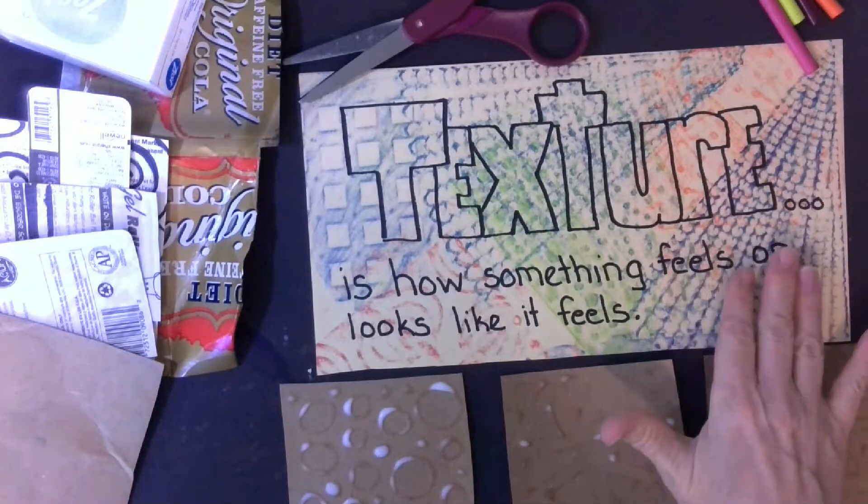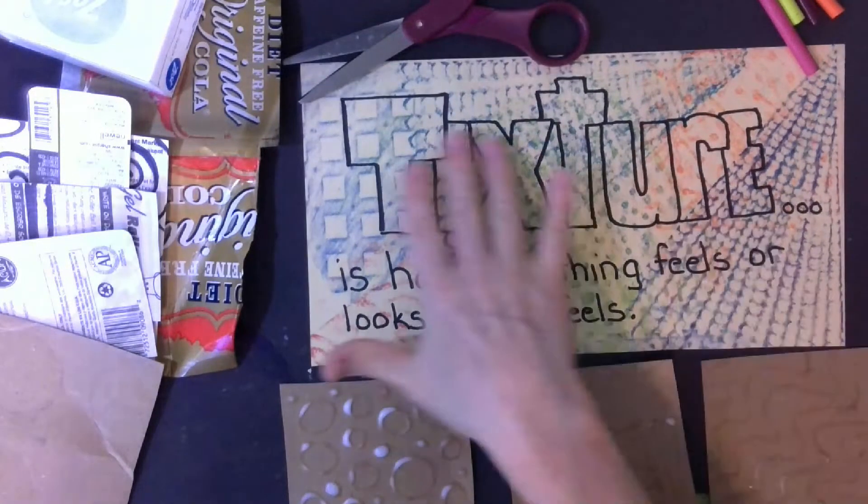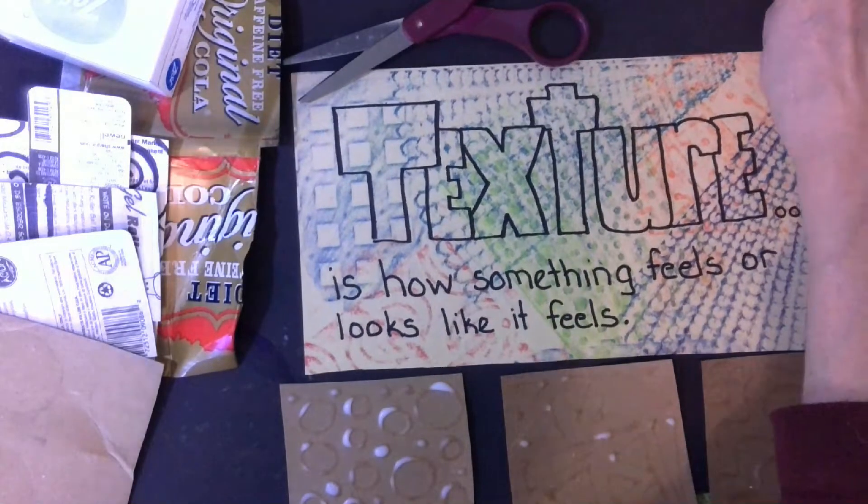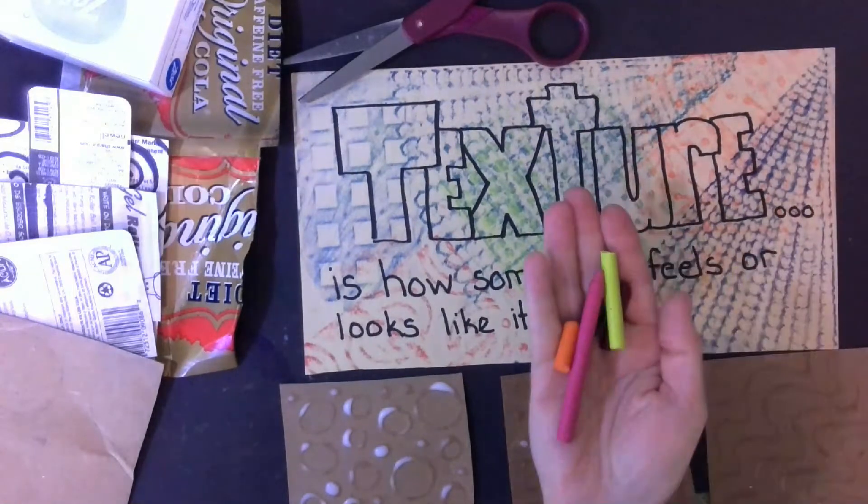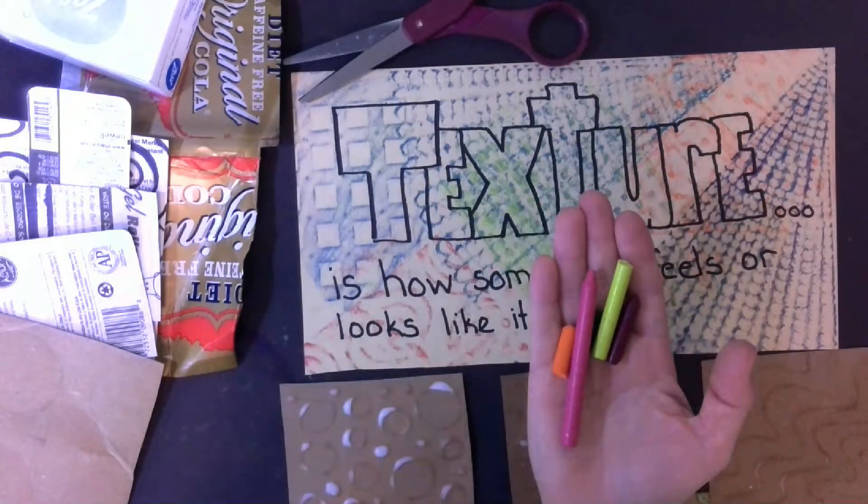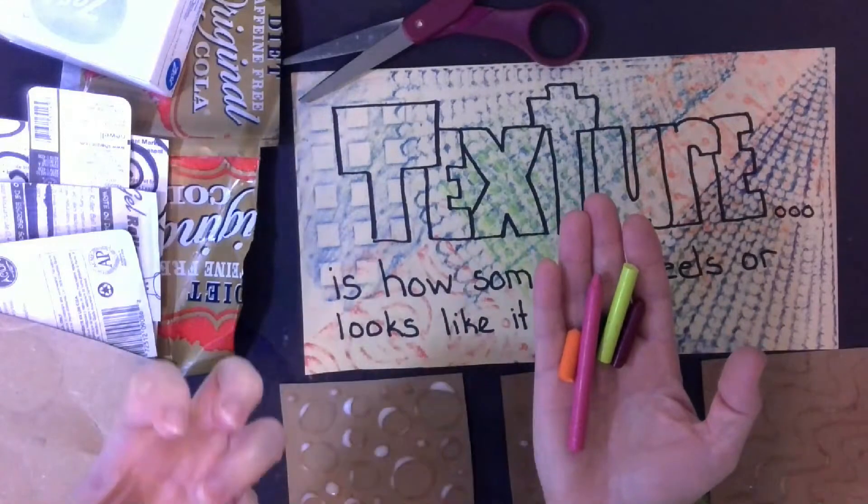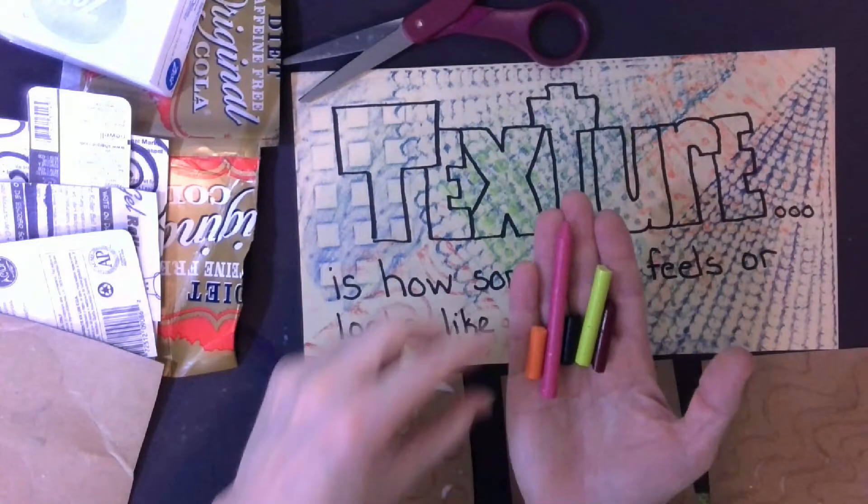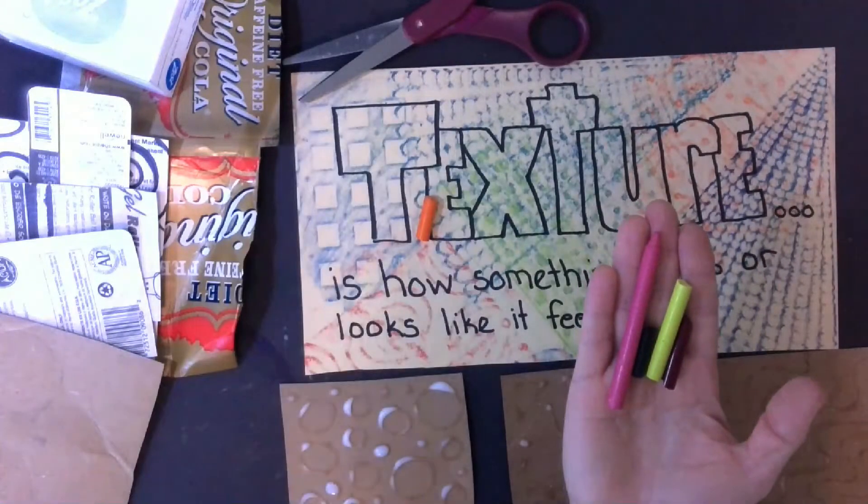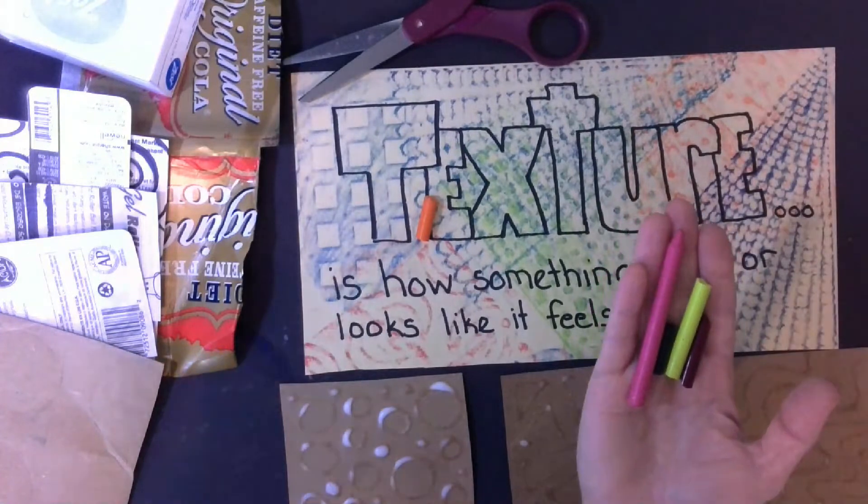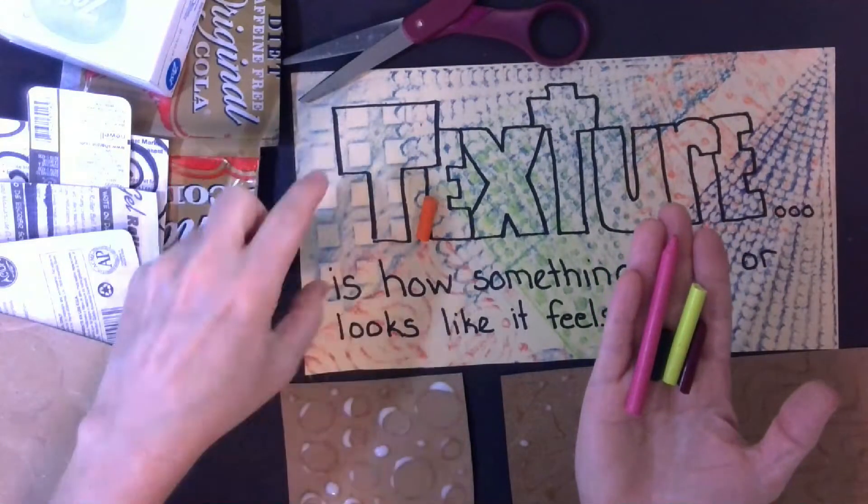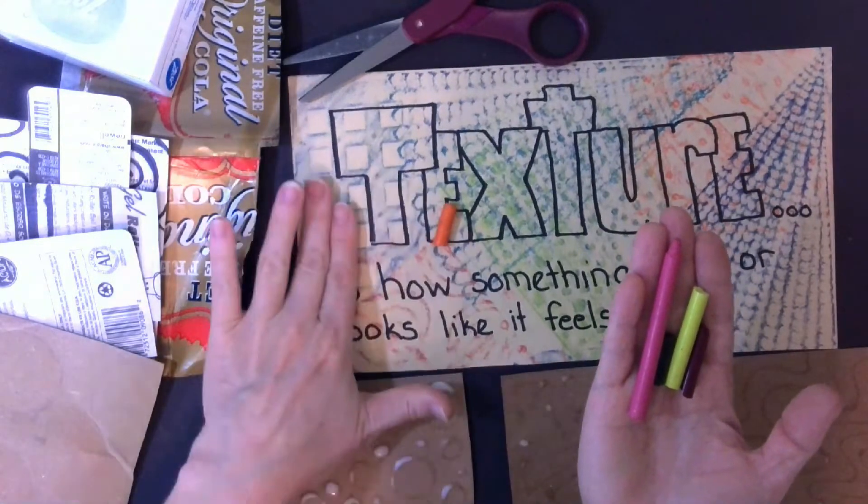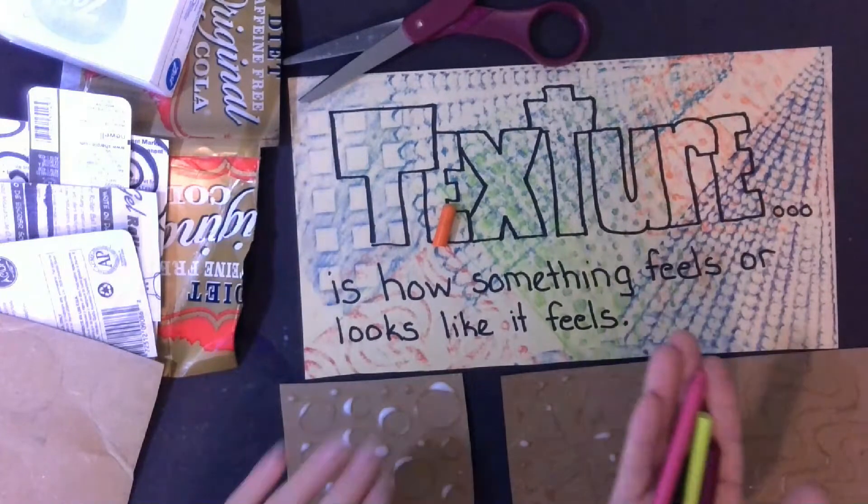Look at my background. These are all from texture rubbings. Texture rubbings is where you take your broken old crayons. Never throw them away. We're going to peel off the paper and lay them down sideways. And we're going to transfer. That means we're going to take something that has a roughness, put a piece of paper over it, rub on it, and we're going to transfer that texture onto our piece of paper.